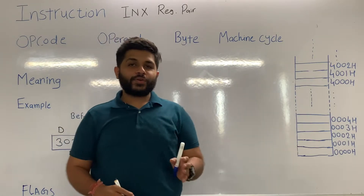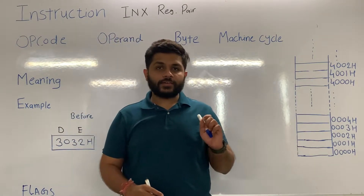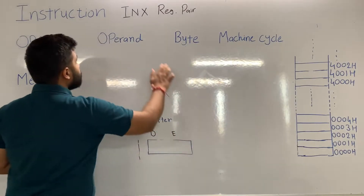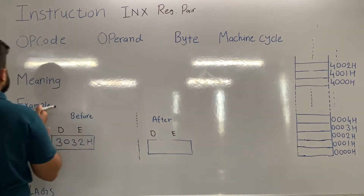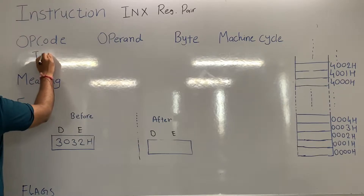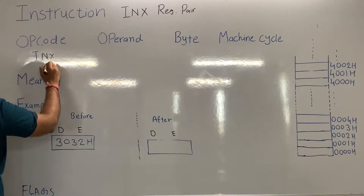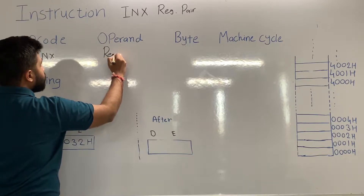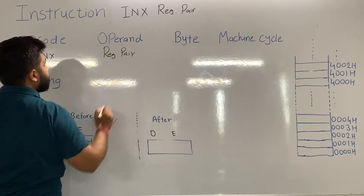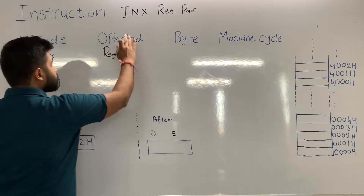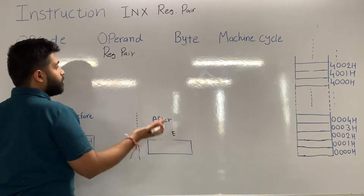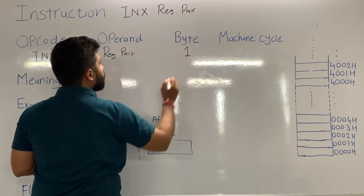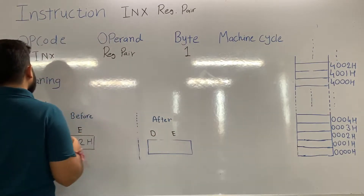In the INX register pair instruction, the first portion is the opcode — that is INX — and the remaining part is the operand, which is the register pair. No data can be seen in this instruction, which means this instruction is of 1 byte.